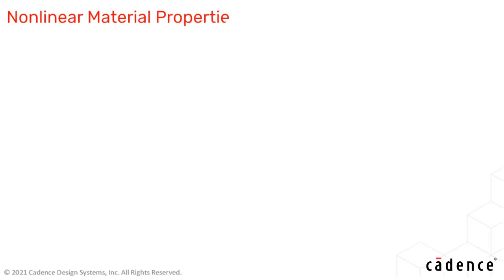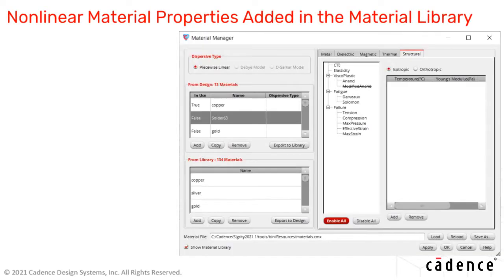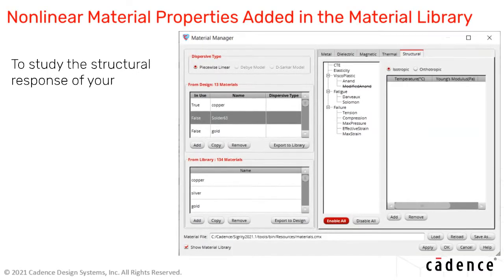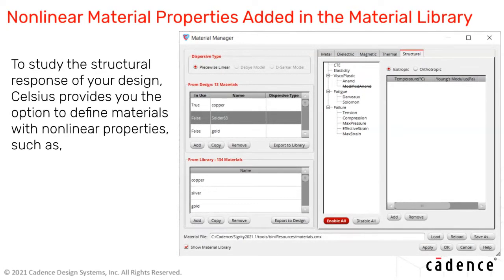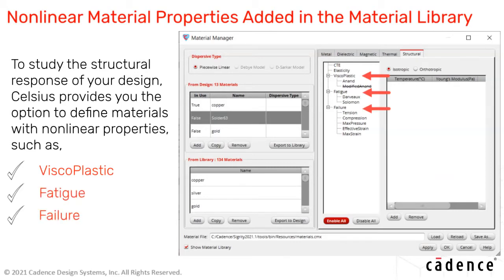Materials with non-linear properties are now supported in Celsius. To study the structural response of your design, Celsius provides the option to define materials with non-linear properties, such as Visco Plastic, Fatigue, and Failure.